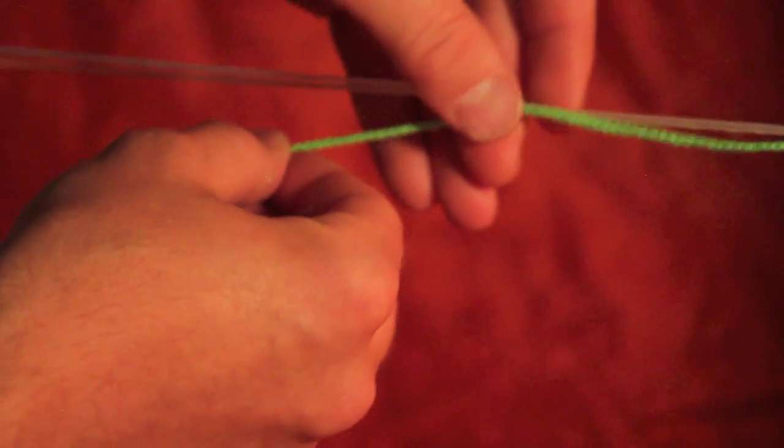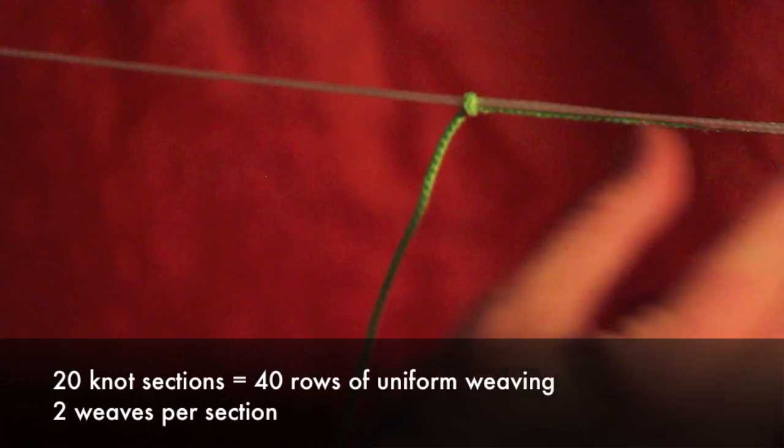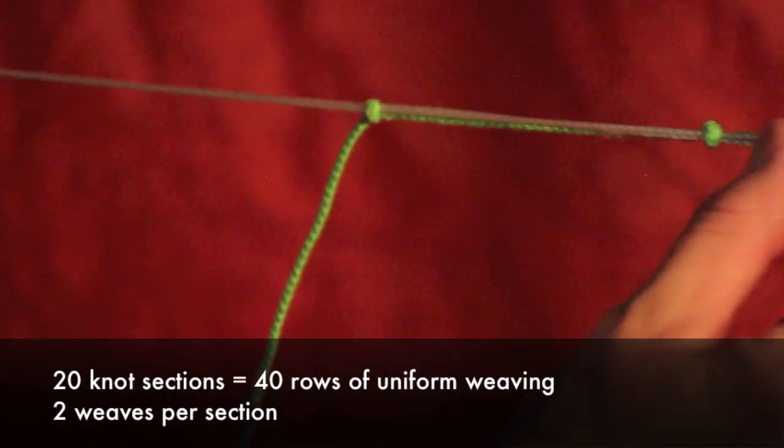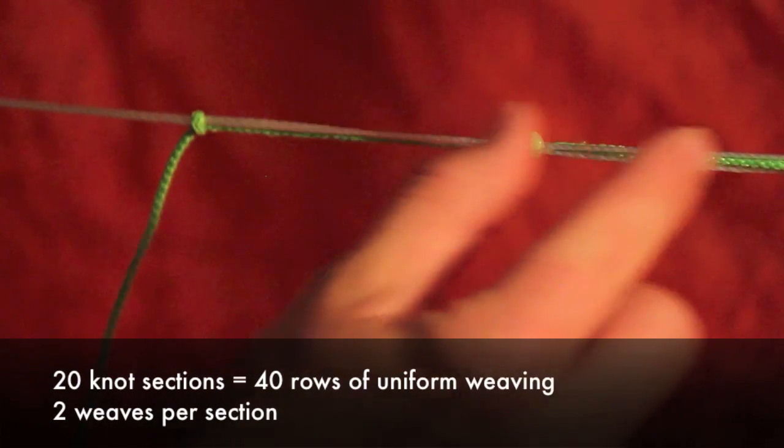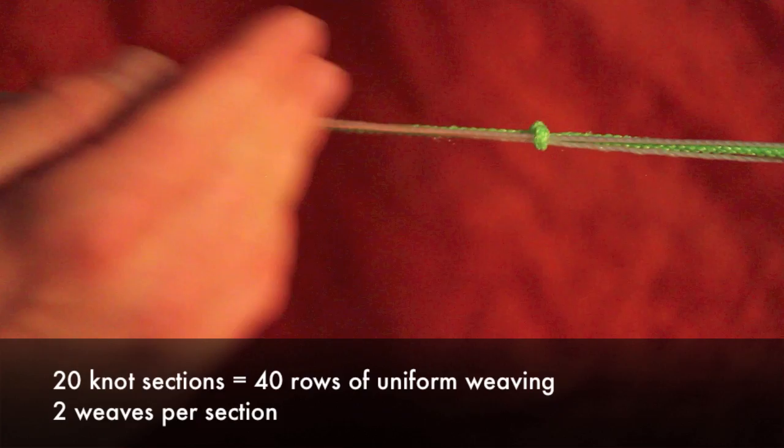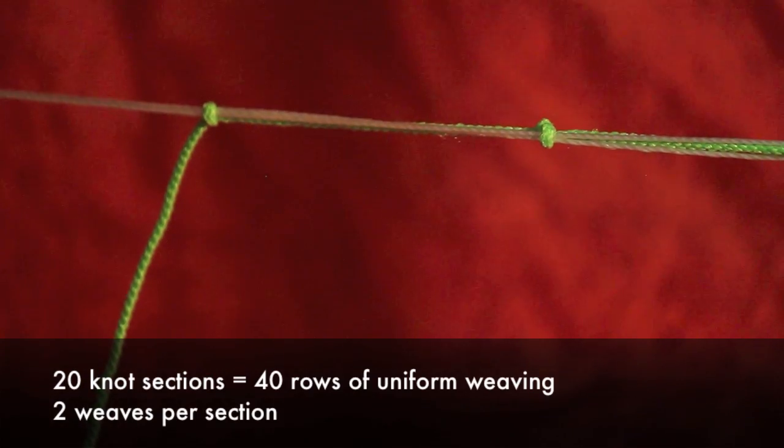21 knots, evenly spaced, and that will create 20 sections. It's important that we have 20 sections because that is going to allow us to have a nice uniform weave when we start the Mayan pattern.